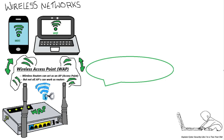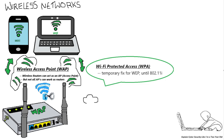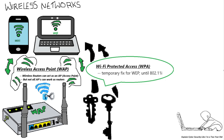Given the flaws with WEP, a new standard was under development known as 802.11i. However, this was going to take some time to create. In the meantime, a replacement for WEP was released known as Wi-Fi Protected Access, WPA. Whilst WPA was a temporary fix, it provided a significant improvement over WEP in that WPA does not use the same static key to encrypt all communications. Instead, it negotiates a unique key set with each wireless client.